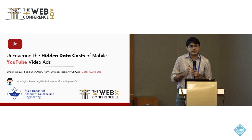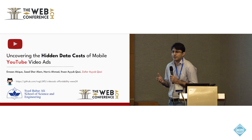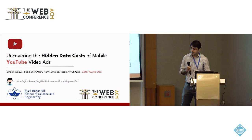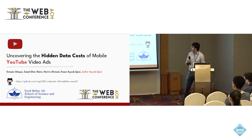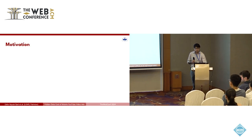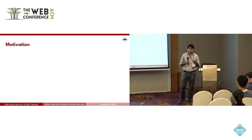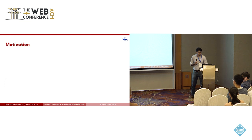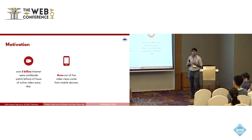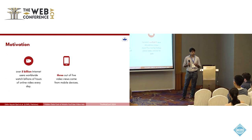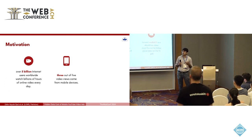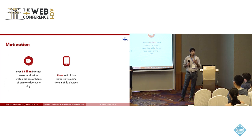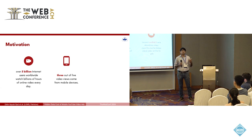Let me begin by sketching the broader motivation for why we are looking into this problem. Popular video streaming services like YouTube and TikTok are the most popular services on the Internet, and most of the views on these platforms are coming from mobile devices. These popular video streaming platforms attract a large number of global marketers who use them for advertisements, which is good for the platform providers and for the advertisers.